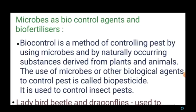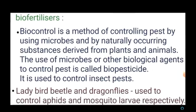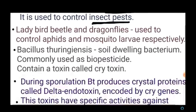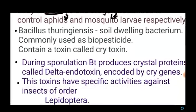Next we are going to see about microbes as biocontrol agents and biofertilizers. Biocontrol is a method of controlling pests by using microbes and naturally occurring substances derived from plants and animals. Biopesticides are microbes or other biological agents used to control pests. Biopesticides are mainly used to control insect pests. For example, ladybird beetles and dragonflies are used to control mosquito larvae. Another example is Bacillus thuringiensis, a soil-dwelling bacterium and the most commonly used biopesticide.